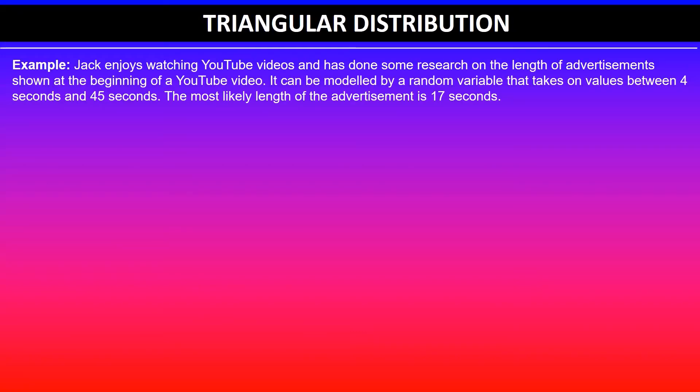In this example, Jack enjoys watching YouTube videos and has done some research on the length of advertisements shown at the beginning of a YouTube video. It can be modeled by a random variable that takes on values between 4 seconds and 45 seconds.